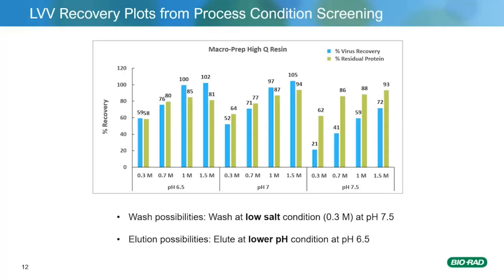Coming back to the process condition screening results for MacroPrep HiQ resin. The plot shows the percent lentivirus recovered with respect to changes in pH and salt concentration. The data shows an interesting trend wherein lentiviral recovery increased with a decrease in elution pH. This behavior has important implications for process design, wherein a large fraction of the protein impurities could potentially be washed from the column at a lower salt concentration at pH 7.5, while the lentivirus could then be eluted at a relatively higher salt concentration at a lower pH of 6.5. Thus, MacroPrep HiQ data provided promising results for designing a bind-elute lentiviral purification step.